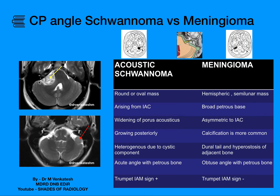Schwannomas are usually heterogeneous due to a cystic component — as you can see in this example, they have a few tiny cystic areas. Whereas meningioma is usually homogeneous, sometimes heterogeneous depending upon the presence of calcification or degeneration.